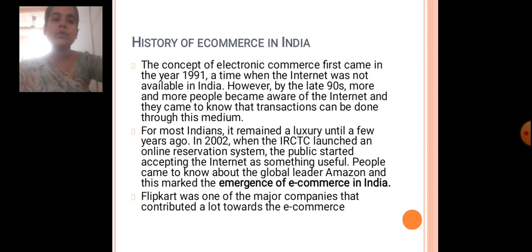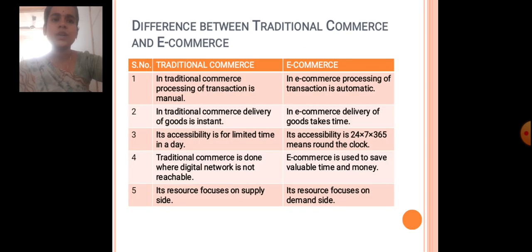Flipkart was one of the major companies that contributed towards E-Commerce. Differentiating Traditional Commerce and E-Commerce: in Traditional Commerce, processing of transactions is manual, whereas in E-Commerce it is automatic. Traditional Commerce delivers goods instantly; E-Commerce delivery takes time. Traditional Commerce accessibility is limited, while E-Commerce is accessible 24x7 round the clock. Traditional Commerce is done where digital networks are not reachable; E-Commerce is used to save valuable time and money. Traditional Commerce focuses on the supply side; E-Commerce focuses on the demand side.